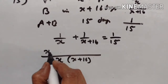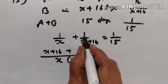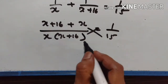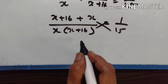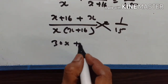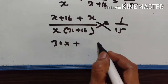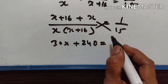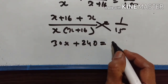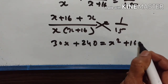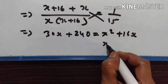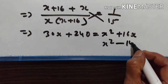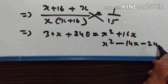Taking the LCM, we get 2x plus 16 over x(x+16) equals one upon 15. Cross multiplying: 15 times (2x plus 16) equals x(x plus 16), giving 30x plus 240 equals x squared plus 16x. Rearranging: x squared minus 14x minus 240 equals zero.